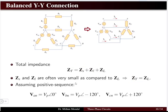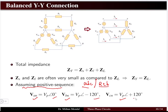We have discussed phase sequence, which can be ABC (positive phase sequence) or ACB (negative phase sequence). Considering the system has a positive phase sequence, the three-phase voltages will have the same magnitude with a 120-degree phase difference, following the ABC sequence. The currents flowing through the lines are I_A, I_B, and I_C, with a neutral current I_N flowing between the neutral wires of the source and the load.